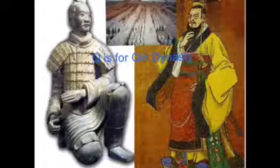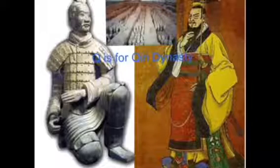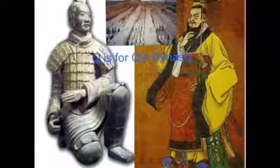Q is for Qin Dynasty. It was the first unified Chinese empire. They designed the first writing systems and created standardized money and most of the Great Wall of China. They also built roads and canals.